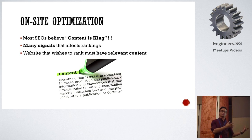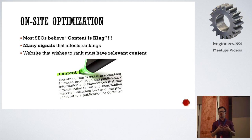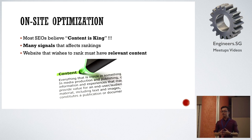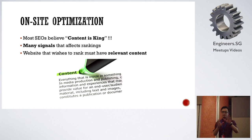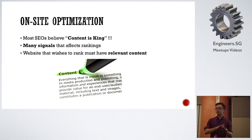Google gives users value, and that's why people continue to use Google. So if you wish to rank for certain keywords, you have to have relevant content. You can't say you want to talk about SEO but actually be talking about where's the best chicken rice or where to get the best beer in Singapore — that's not relevant. If your whole content is about chicken rice, don't expect to rank for SEO. If you want to rank for SEO, talk about SEO.